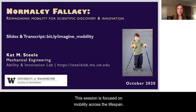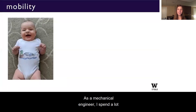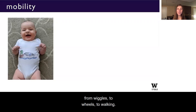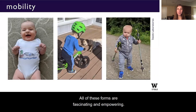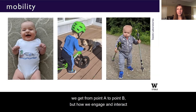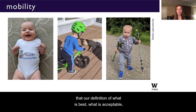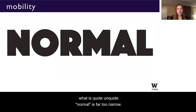This session is focused on mobility across the lifespan. As a mechanical engineer, I spend a lot of time thinking about movement in all of its diverse forms, from wiggles to wheels to walking. All of these forms are fascinating and empowering. However, when it comes to mobility — not just how we get from point A to point B, but how we engage and interact with the world — I've come to the conclusion that our definition of what is best, what is acceptable, what is quote-unquote normal is far too narrow.